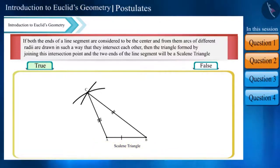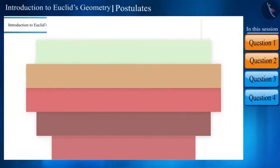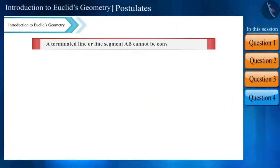A terminating line or line segment AB cannot be converted to line AB. Is this statement true?